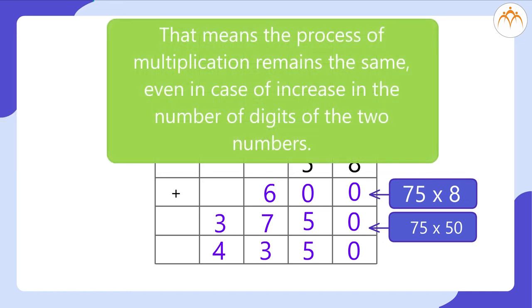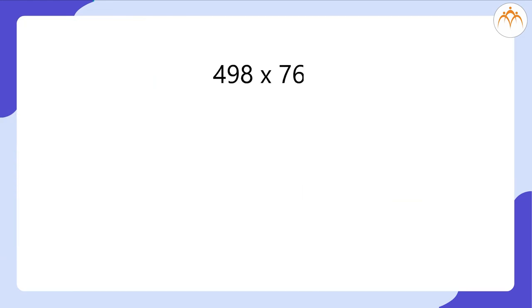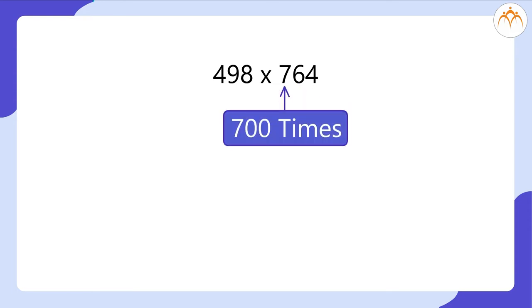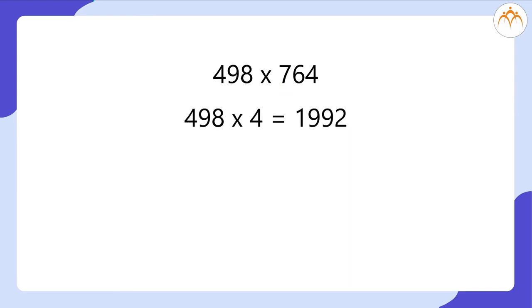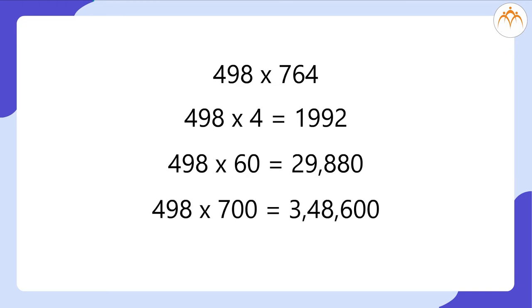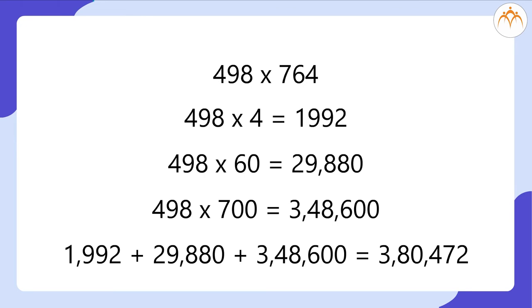That means the process of multiplication remains the same even in case of an increase in the number of digits of the two numbers. What a relief! Super easy, right? Let us take another example: 498 multiplied by 764. It means we are adding 498 four times, and again 60 times more, and 700 times even more. That means we can multiply 498 by 4, then 498 by 60, and then 498 by 700. Lastly, add these three answers, just the same as we did in our last example.